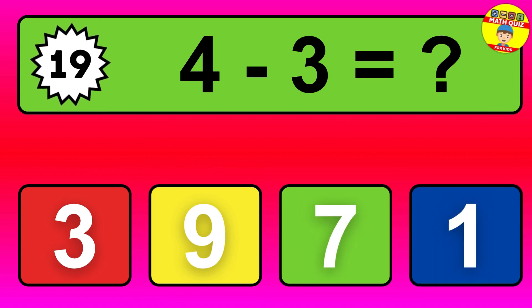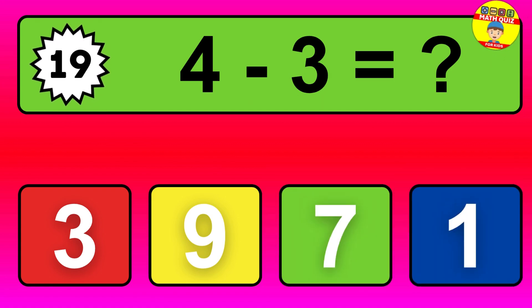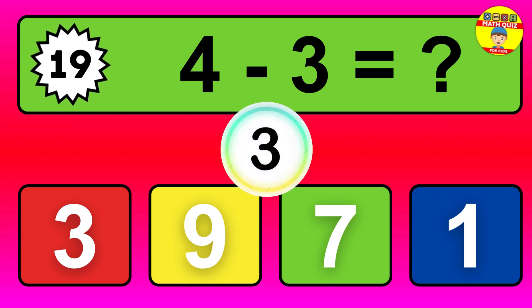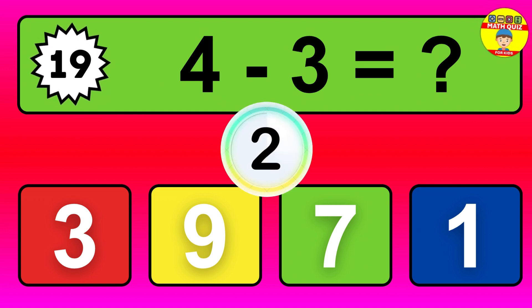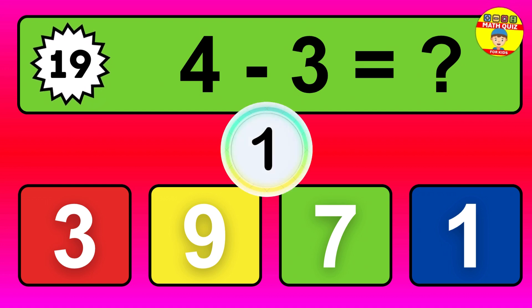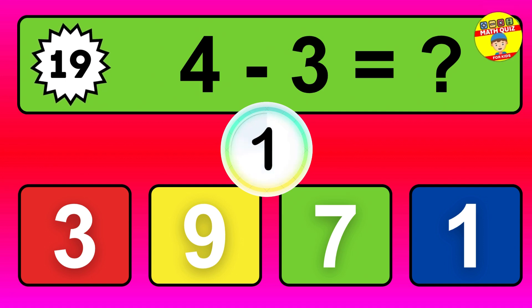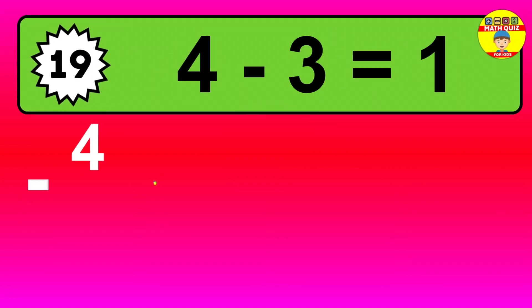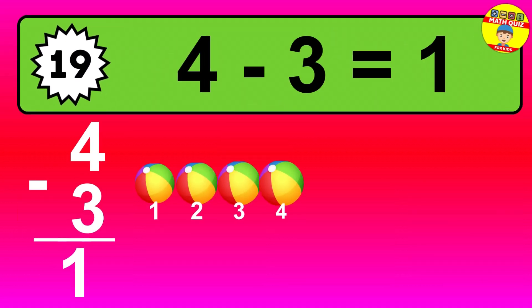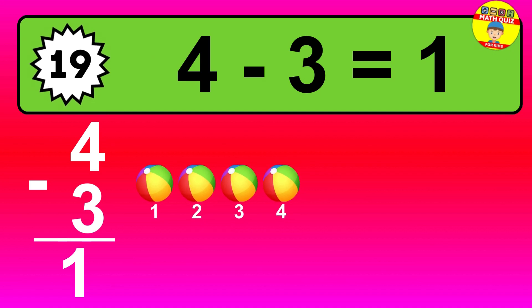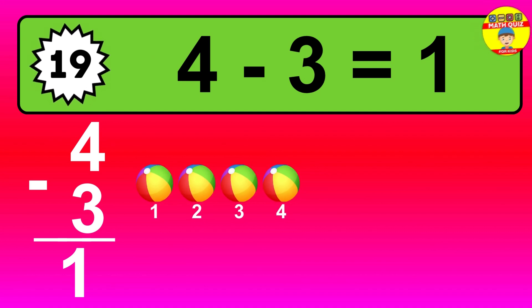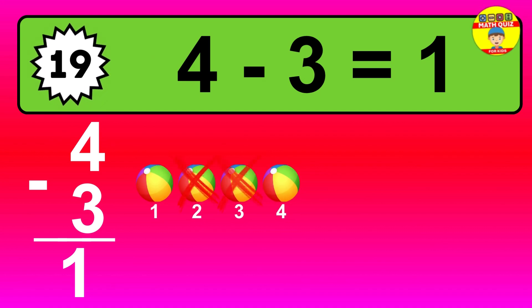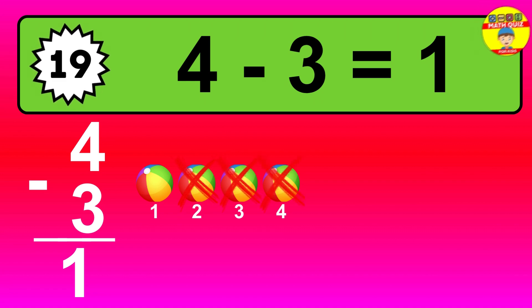Question nineteen: four minus three equals what? The answer is four minus three is one. Let's count it. One.